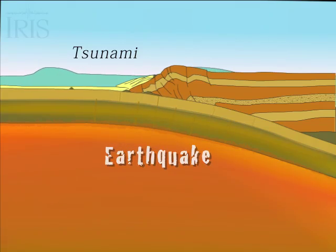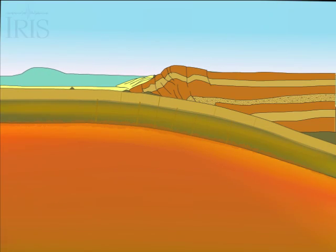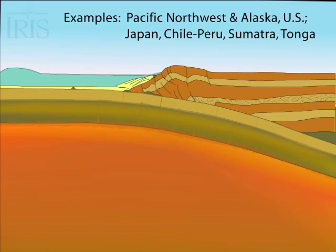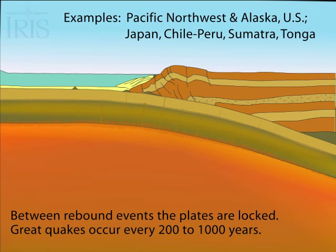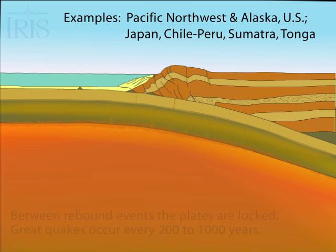Tsunamis occur when the ground beneath the ocean is displaced, as it does in this simplified animation. This cycle of locking and building stress, followed by catastrophic release, repeats every few hundred years.